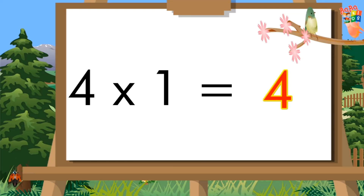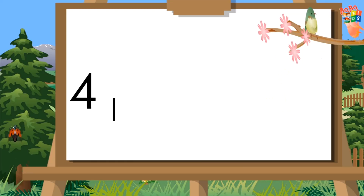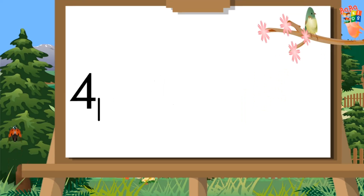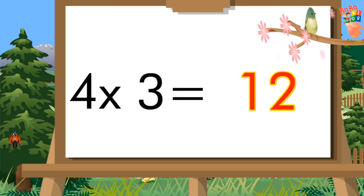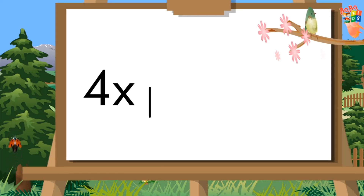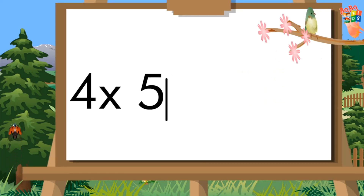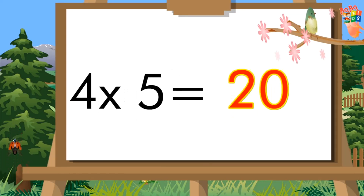Table of Four. Four, one's a four. Four, two's a eight. Four, three's a twelve. Four, four's a sixteen. Four, five's a twenty.